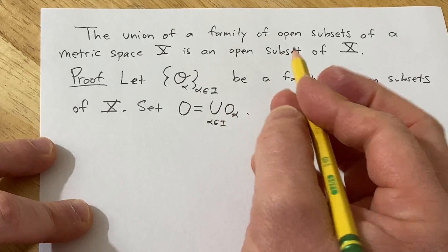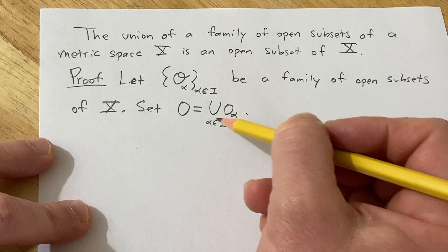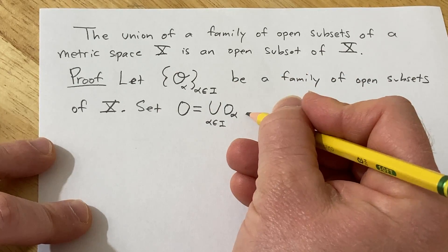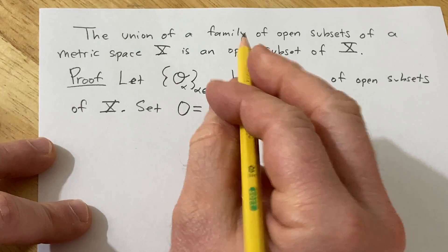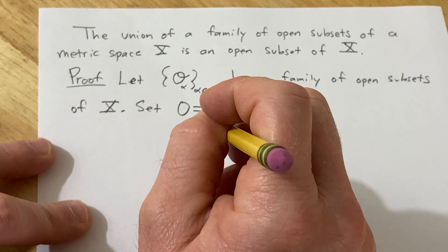So first note it's a subset. These are all subsets, therefore the union of subsets is a subset. So that part is trivial. So now we just have to show that it's open.